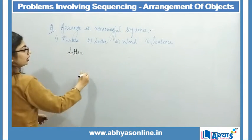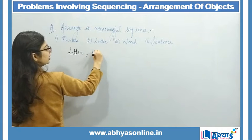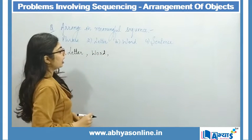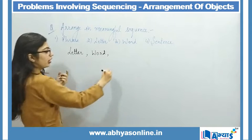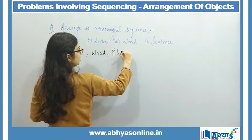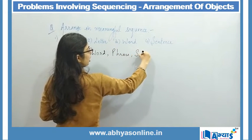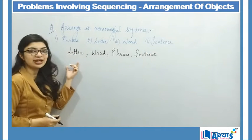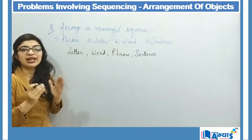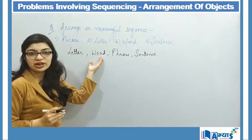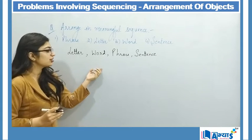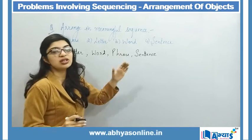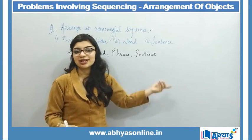First of all we will have 'letter', after that we will have 'words', then we will have 'phrase', and phrase leads to 'sentences'. This is our logical sequence — first we have letters, when we collect letters we get words, the collection of words is referred to as a phrase, and when we expand the phrase we get sentences.